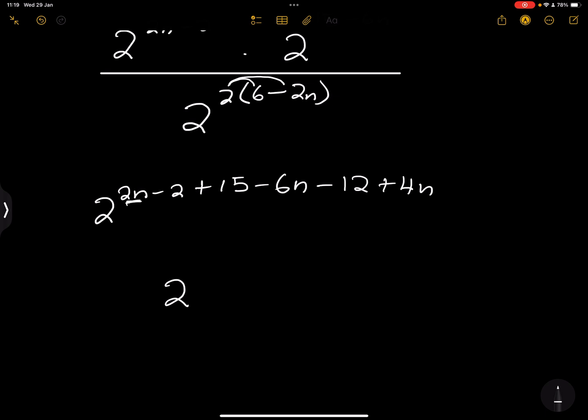And finally, let's take all the like terms. That's 2n minus 6n gives us minus 4n plus 4n gives us zero, so these cancel out. And finally we've got minus 2 plus 15, which gives us 13, and 13 minus 12 gives us 1. So our final answer is 2 to the power of 1, which is actually equal to 2.